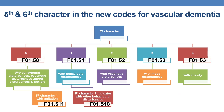Coming to the fifth and sixth characters in the new codes of vascular dementia: the fifth and sixth characters are almost similar, with the fourth character indicating the stage. In vascular dementia (series F01), fifth character 0 indicates without behavioral disturbances, psychotic disturbances, mood disturbances, or anxiety. So vascular dementia unspecified severity without any disturbances is given by the final code F01.50.